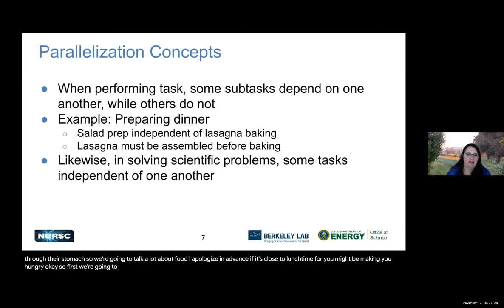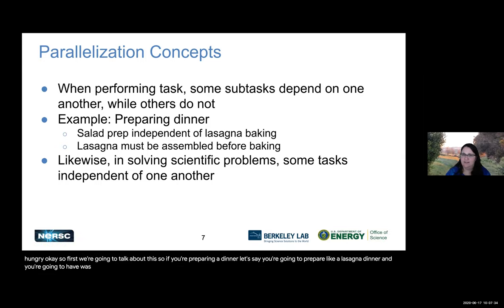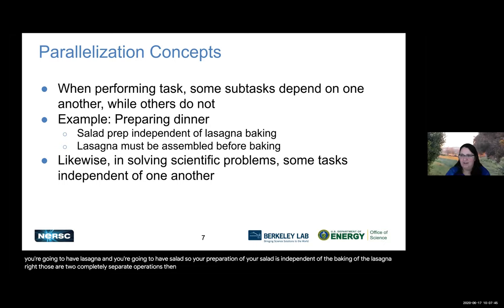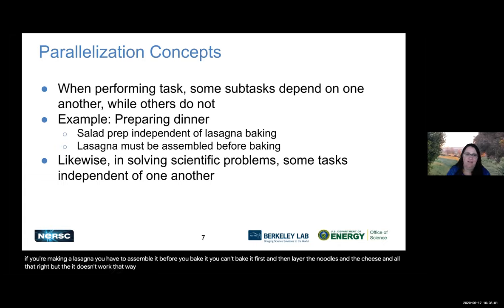If you're preparing a lasagna dinner — lasagna and salad — your preparation of the salad is independent of baking the lasagna, right? Those are two completely separate operations; you don't have to coordinate between them. However, if you're making a lasagna, you have to assemble it before you bake it. You can't bake it first and then layer the noodles and the cheese. So those are some examples. Likewise, when we're solving scientific problems, there are some tasks that depend on each other and others that are independent.